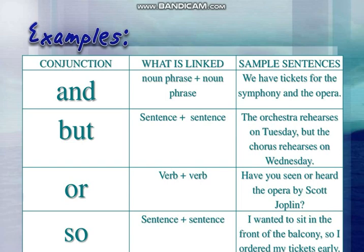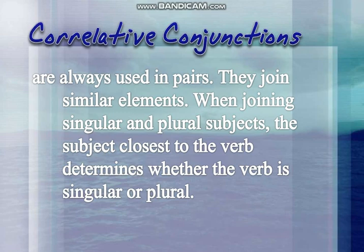Let's see how they are used in sentences. 'And' links two noun phrases: 'We have tickets for the symphony and the opera.' 'But' joins two sentences: 'The orchestra rehearses on Tuesday, but the chorus rehearses on Wednesday.' 'Or' joins two verbs: 'Have you seen or heard the opera by Scott Joplin?' 'So' joins two sentences: 'I want to sit in the front of the balcony, so I ordered my tickets early.'